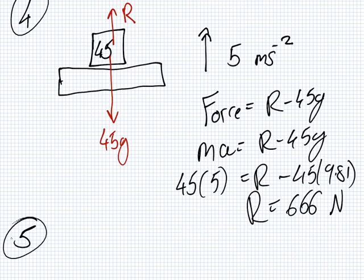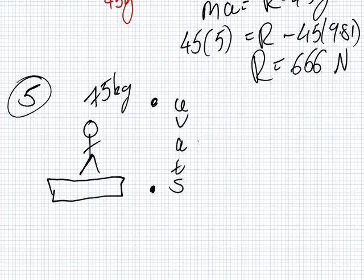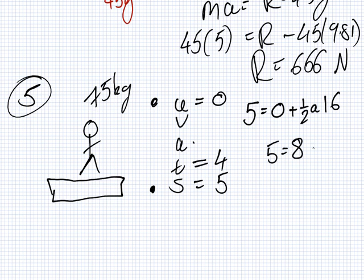Last question now. Five. A 75 kg man is standing on a scale in an elevator. It takes the elevator 4 seconds to move up one floor, a distance of 5 meters. What does the scale say? So, it takes them 4 seconds. And the distance is 5 meters. And we assume the elevator starts at rest. So, we can easily calculate the acceleration. S equals UT plus half AT squared. So, A is equal to 5 over 8 meters per second squared.